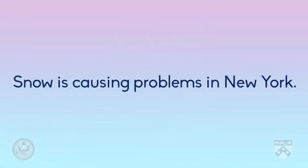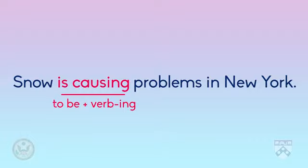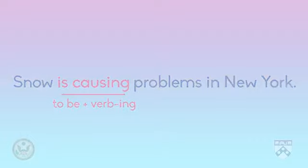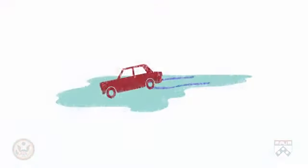For example, in the sentence 'Snow is causing problems in New York,' we have the subject, 'snow,' followed by the verb 'to be,' 'is,' and then the main verb 'cause' with '-ing.' The broadcaster is showing that the action is happening now.